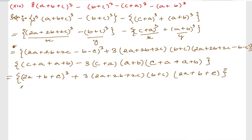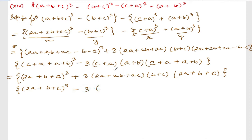From here you can write down (c plus a). With 2a so I can write it as (a plus b plus c). From here: (2a plus b plus c) whole cube — oh wait, the cube is missing here. Minus 3 times (c plus a)(a plus b) and this will give (2a plus b plus c).